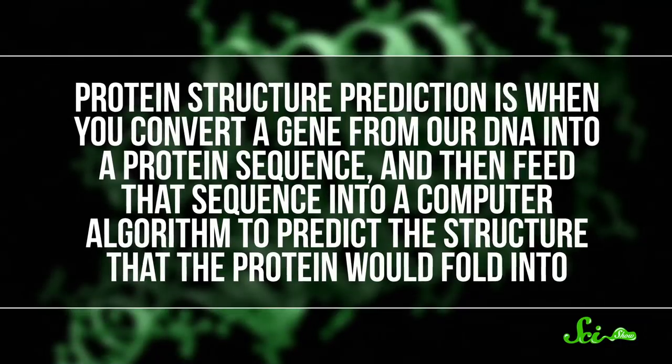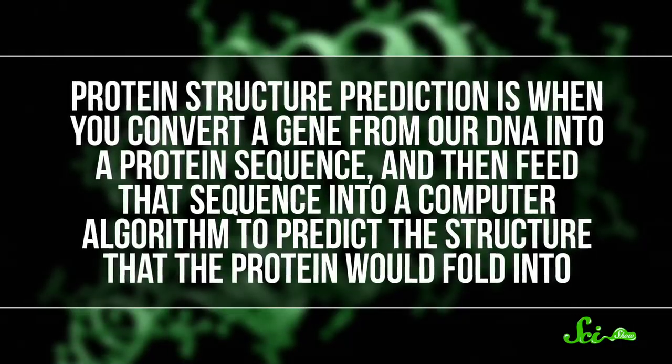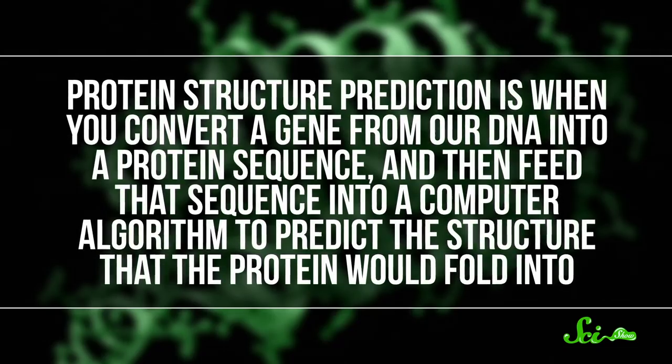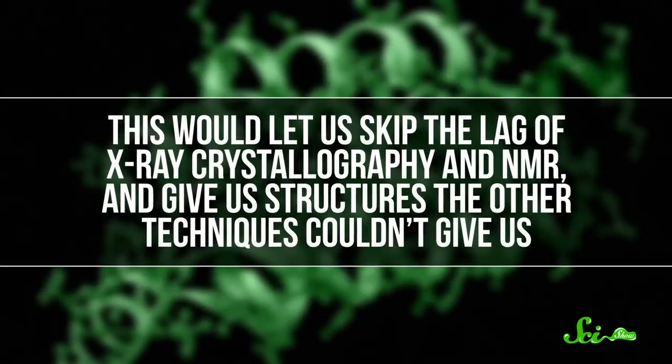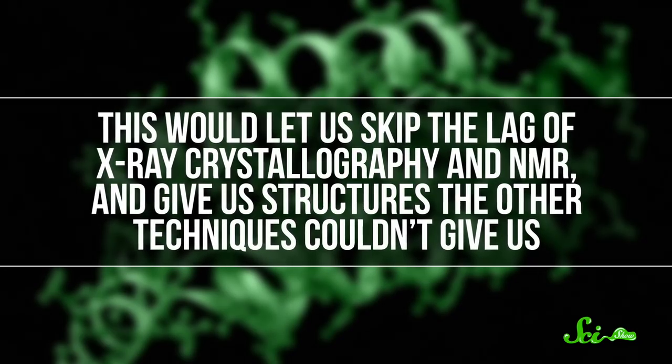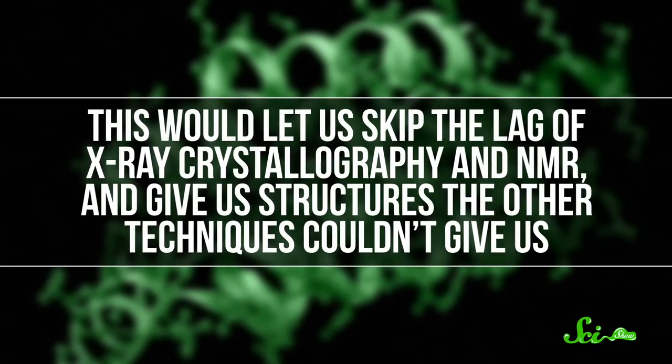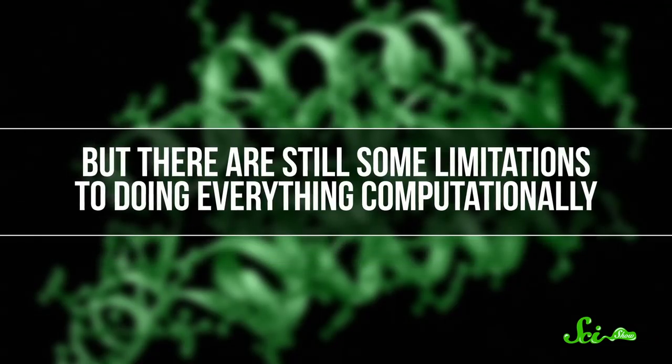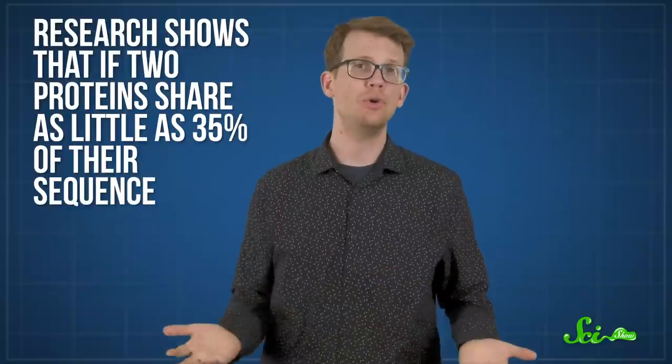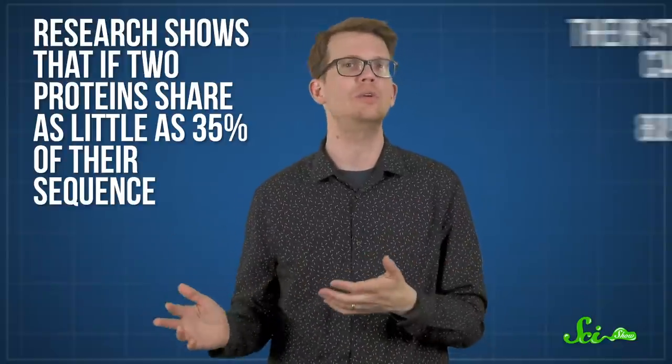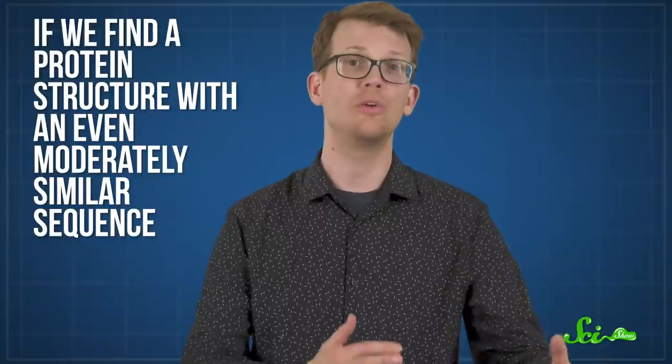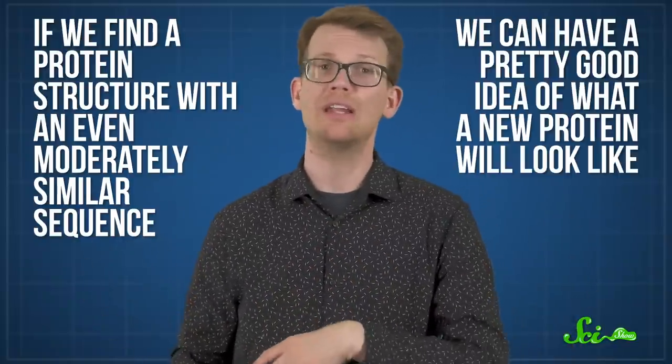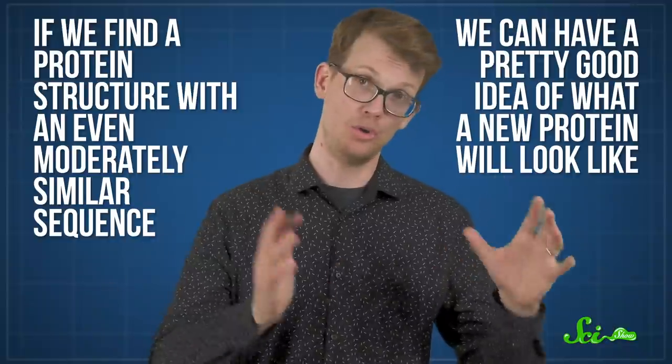Actually, we do: predicting the structure of proteins. Protein structure prediction is when you convert a gene from our DNA into a protein sequence, and then feed that sequence into a computer algorithm to predict the structure the protein would fold into. This would let us skip the lag of X-ray crystallography and NMR, and give us structures the other techniques couldn't give us. But there are still some limitations to doing everything computationally. Research shows that if two proteins share as little as 35% of their sequence, their structure can still be about 80% similar. In other words, if we find a protein structure with an even moderately similar sequence, then we can have a pretty good idea of what a new protein will look like.